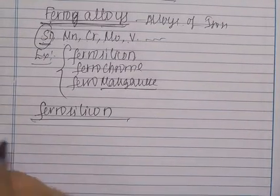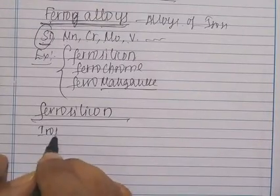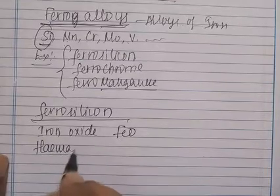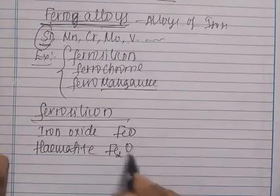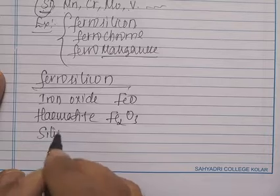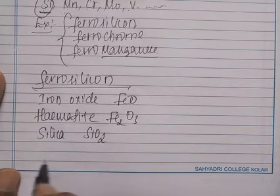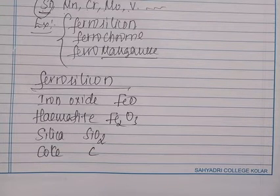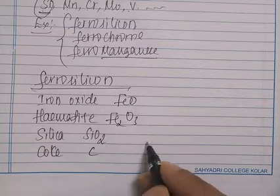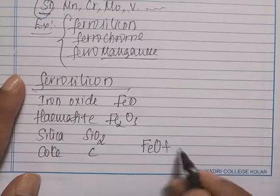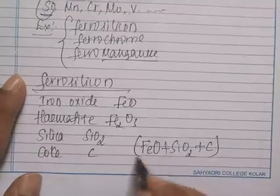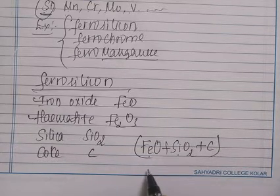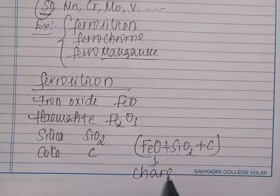Let us see how ferro silicon is manufactured. The raw materials required are iron oxide, hematite ore (Fe₂O₃), silica (SiO₂), and coke. The mixture of iron oxide, silica, and coke is called the charge.